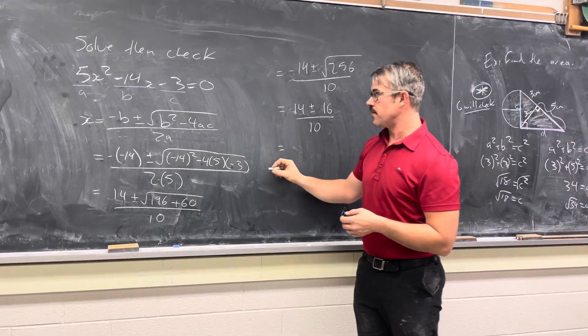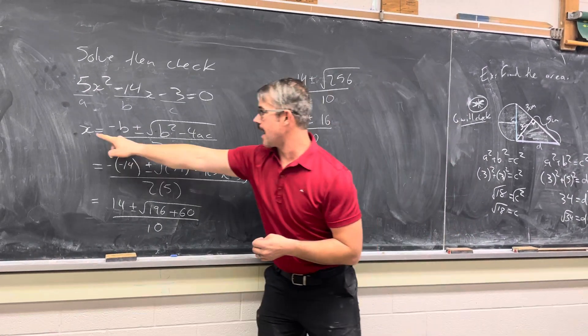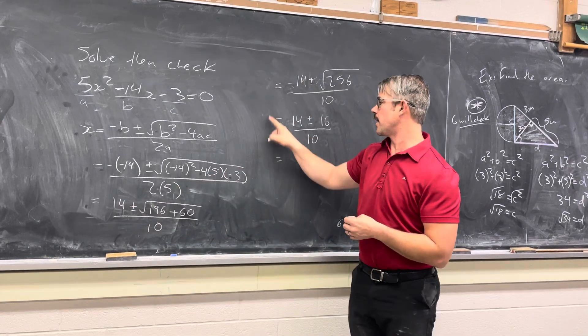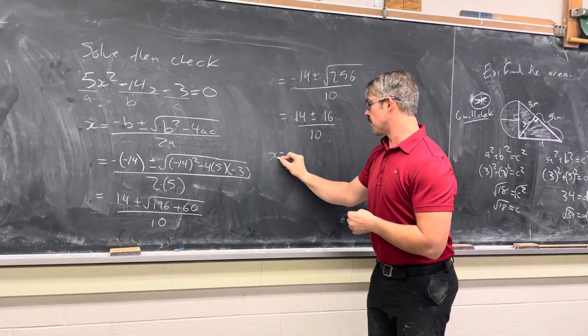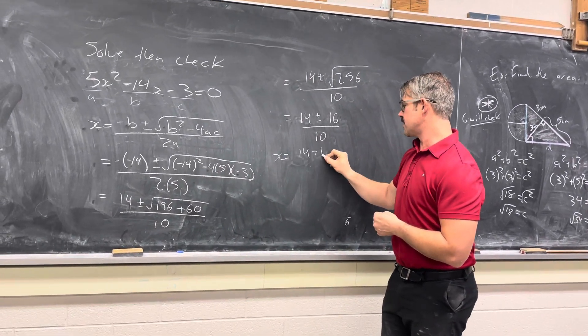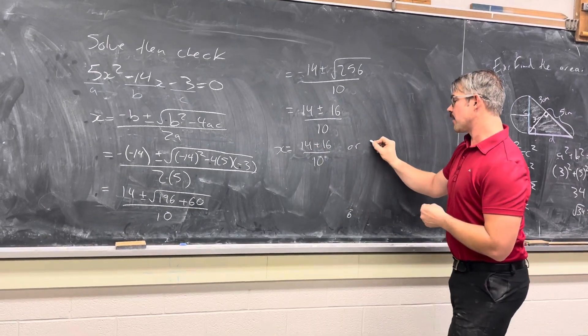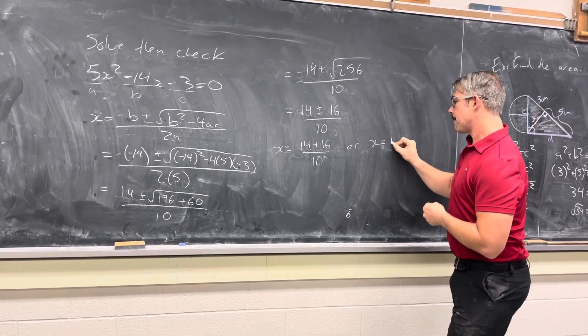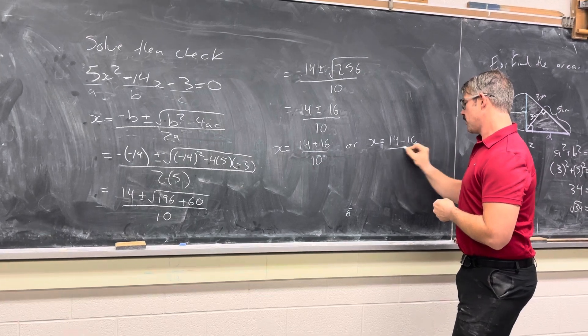And now we have two values for x. So notice this was x on the left. I could have written x the entire way along. So the first time I go through, I'm going to write 14 plus 16 over 10. Or I'm going to write 14 minus 16 over 10.